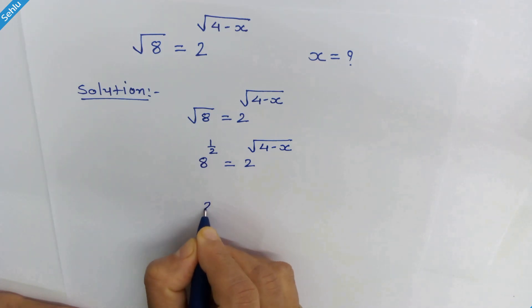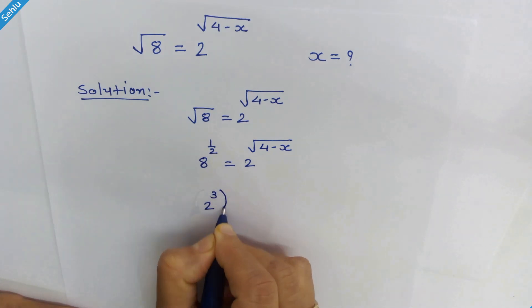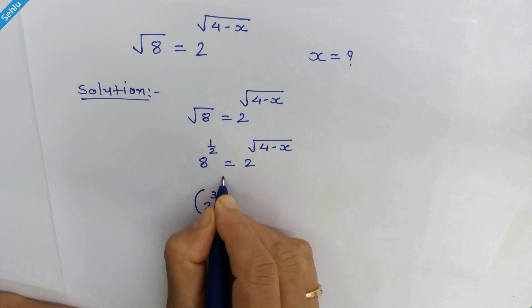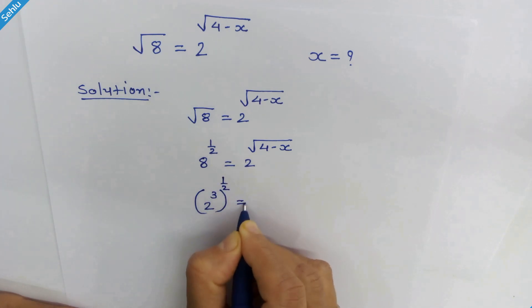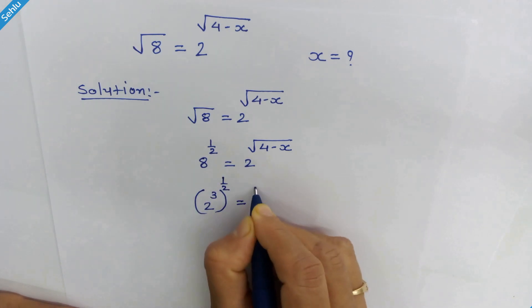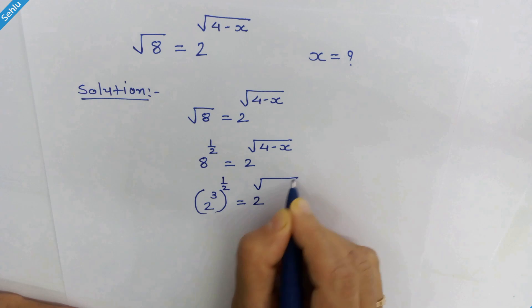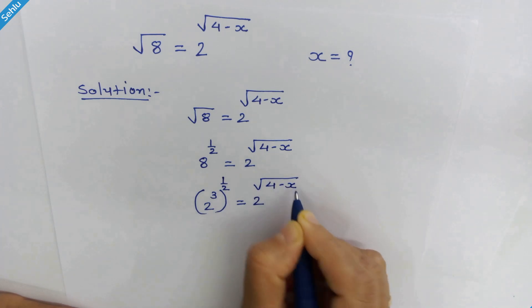So we can write this as 2 cubed, whole raised to 1 upon 2, is equal to 2 raised to square root of (4 minus x).